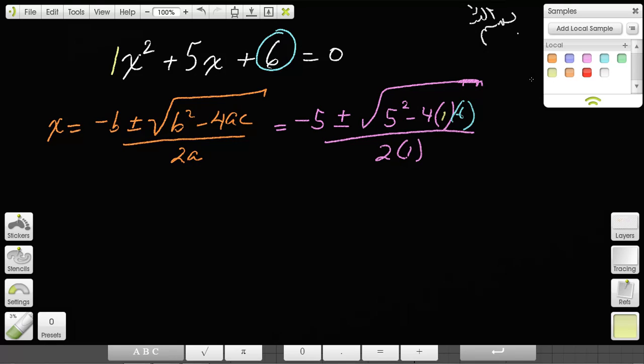Then you simplify: -5 ± √(25 - 24) over 2. Now this becomes -5 ± √1, which is just -5 ± 1 over 2. As I said, this is 2 answers in 1, so now you have to divide it into 2.